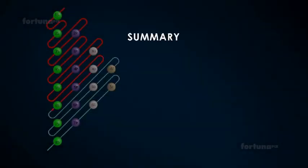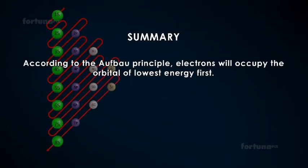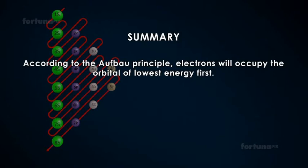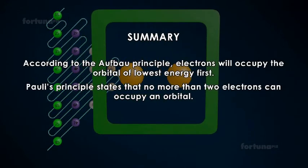Summary: According to the Aufbau principle, electrons will occupy the orbital of lowest energy first. Pauli's principle states that no more than two electrons can occupy an orbital.